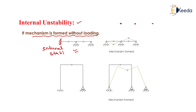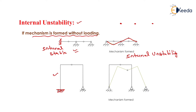In the second diagram, due to three consecutive hinges, the structure will form a mechanism and is therefore known as an internally unstable structure — this is a case of internal instability. In the third diagram, due to the fixed support, the structure will not undergo any type of mechanism formation, and that is why it is also known as an internally stable structure.